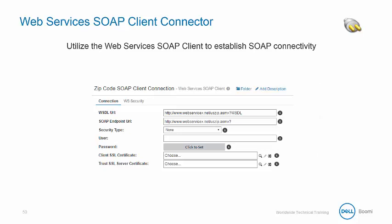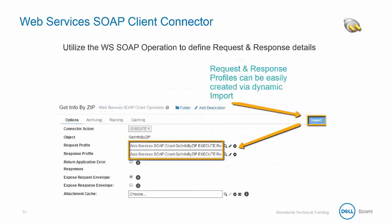Within AtomSphere, we can utilize the web services SOAP client to establish our SOAP connectivity. In order to accomplish this, we need to provide a WSDL URL along with the SOAP endpoint URL. And we can utilize the web services SOAP operation to define the request and response profiles, which are easily created with a dynamic import.